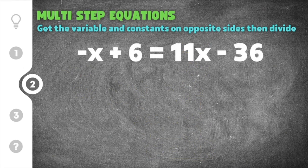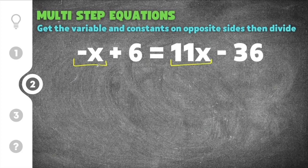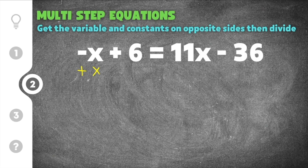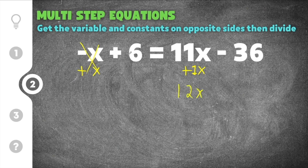Moving on to number 2: negative x plus 6 equals 11x minus 36. The first thing we need to do is get all the variables together on one side and all the constants on the other. I could subtract 11x from both sides, or add 1x to both sides — it doesn't matter which you choose. I'm going to add x to both sides. Negative x plus x cancels on the left, and on the right 11x plus 1x is 12x. The 6 and minus 36 come straight down unchanged, giving us 6 equals 12x minus 36.